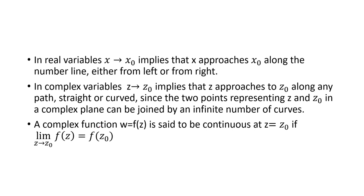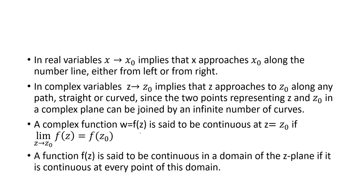Now, the continuity of a complex function: a complex function w = f(z) is said to be continuous at z = z0 if the limit as z tends to z0 of f(z) equals f(z0). Only when this condition holds is the complex function continuous at z = z0.